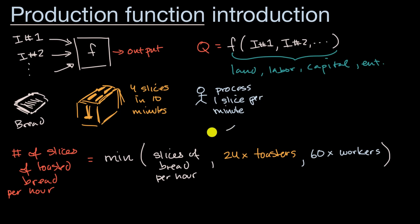Well, the inputs are right over here. The number of slices of bread per hour, the number of toasters we have at our disposal, the number of workers. Toasters you could view as capital. Workers you could view as labor.